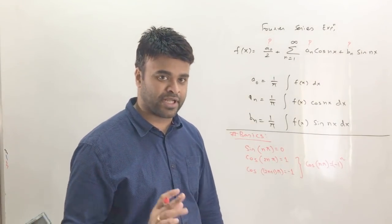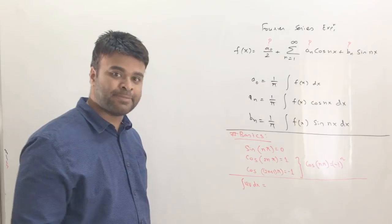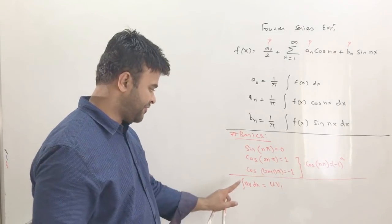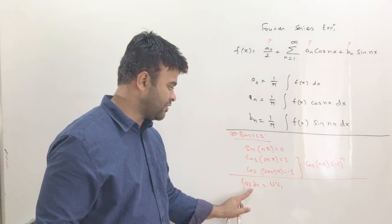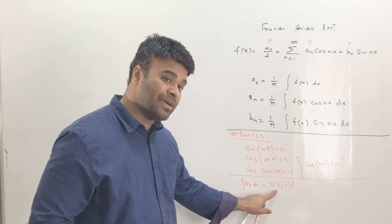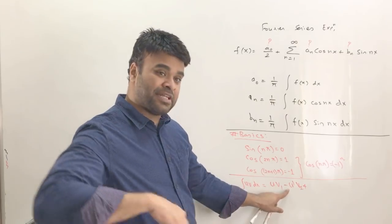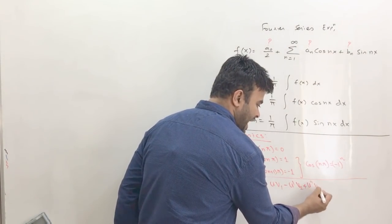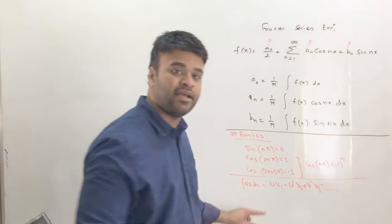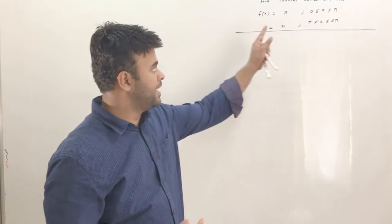Also know that when integrating a product ∫uv dx, the rule is: first term is u·v₁, then minus u′·v₂, then plus u″·v₃, and so on — alternating signs. That's the integration by parts rule we'll apply when solving the problems.